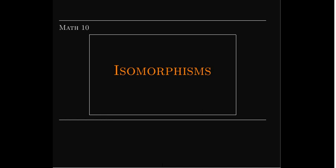In this short video, we're going to extend the idea of an invertible transformation to transformations that go between two general real vector spaces. Such transformations are called isomorphisms.